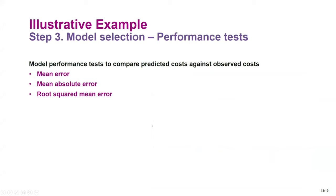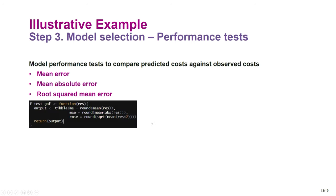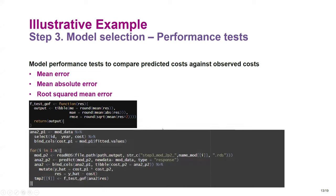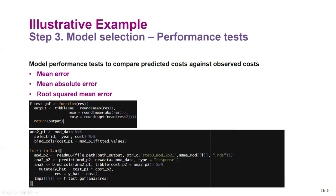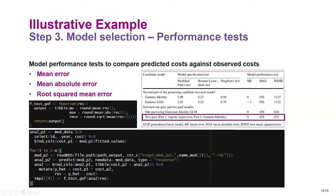We use the final models of these promising candidates and perform performance tests to compare predicted cost against observed cost. The results show not much difference between the first and second candidates. Because the identity link is easier to interpret, we choose the identity link model. The one-part model with Gaussian identity (linear regression) has the problem of potentially predicting negative costs, so ultimately we choose the two-part model as the final model.